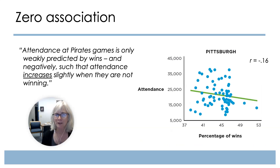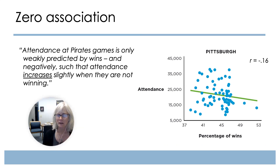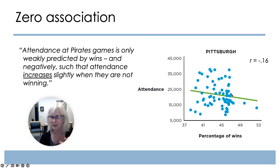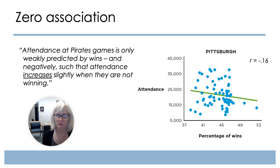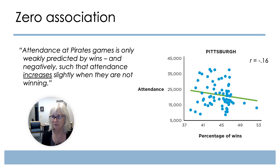For zero correlations — this here is not exactly zero, but it is so low that it probably is not statistically significant. We have a correlation of negative 0.16. The x-axis and y-axis show attendance at a particular game based on the number of wins. Attendance at Pirates games is only weakly predicted by wins, and negatively, such that attendance increases slightly when they're not winning. We'll come back to this later in the course as we discuss why that might happen, because that's not what happens in every state.